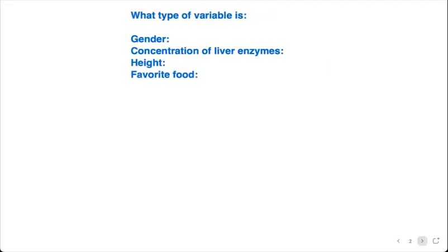To start this, you might be asked questions to identify what type of variable is the following. For each one of these, if you're going to deal with, let's say, gender - gender would be considered categorical. Concentration of liver enzymes, well concentration, that's actually quantitative, and this is dealing with some type of amount or fluid, so it would be considered quantitative and specifically quantitative continuous. Height is also, like I mentioned before, quantitative continuous. And favorite food would just be categorical.